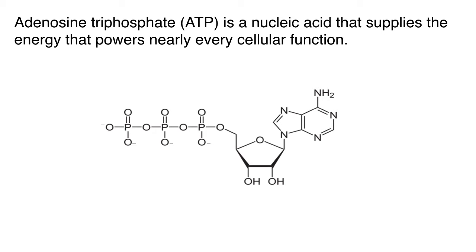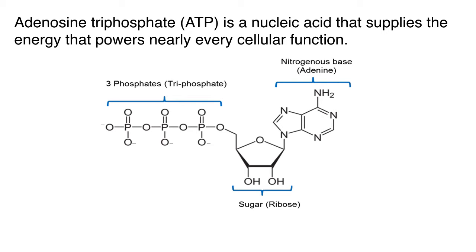ATP, or adenosine triphosphate, is a nucleic acid. It is made of a ribose sugar that has a nitrogenous base called adenine attached to it at one end and a trio of phosphate groups attached at the other end — that's where the "tri" of the triphosphate name comes from. These three phosphate groups hate being bonded to each other because they can't stand being this close together, so whenever the cell manages to break a bond between the phosphate groups in ATP, energy is released.